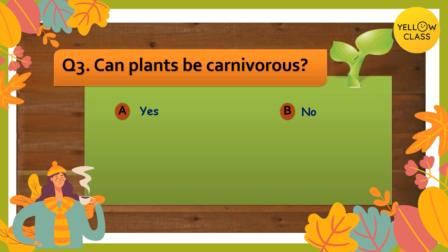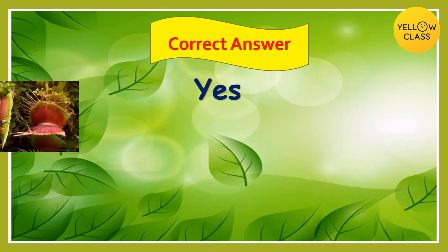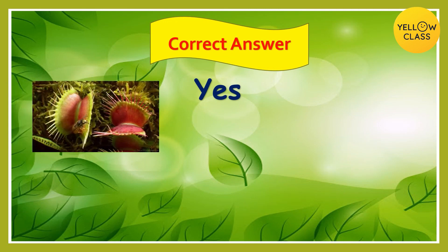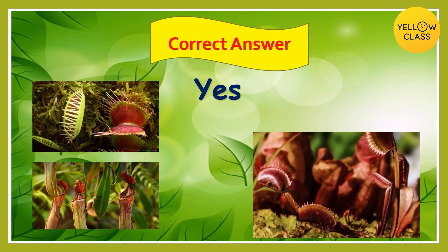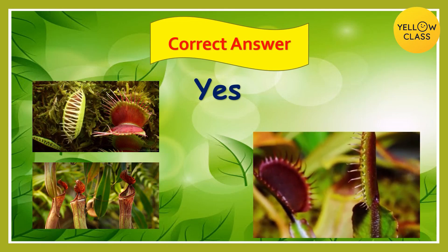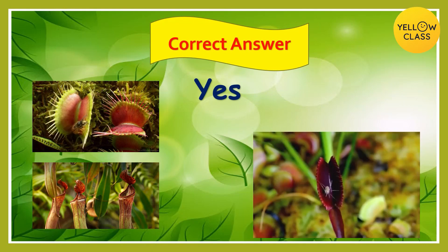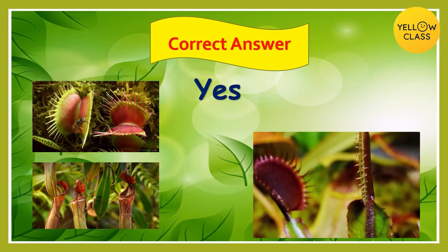You have 10 seconds left — come on, get the right answer! And your time is up. The correct answer is yes, some plants are carnivorous! Carnivorous plants are plants which get nutrients from trapping and eating animals. They are often called insectivorous plants because they usually trap insects like flies, honeybees, and butterflies.